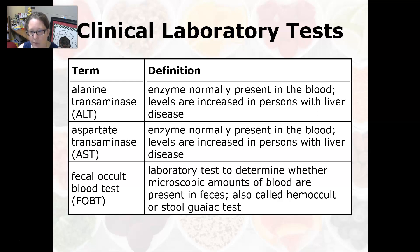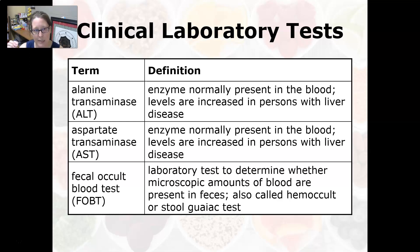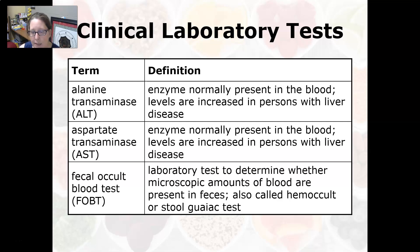So if AST increases, ALT increases. But sometimes AST is also found in muscles, so if just AST is increasing and ALT is normal, then it might be related to a muscular problem. A fecal occult blood test, or FOBT, is a lab test to determine whether microscopic amounts of blood are present in feces.